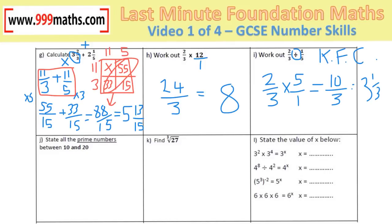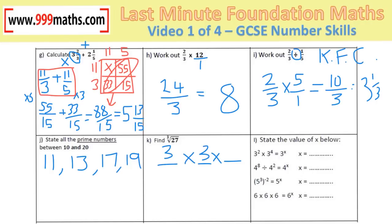Prime numbers: 11 is prime, not 12; 13 is prime, not 14, 15, or 16; 17 is prime, not 18; 19 is prime. Cube root of 27 means what number times itself 3 times gives 27 — it's 3 on each line, so the answer is 3.